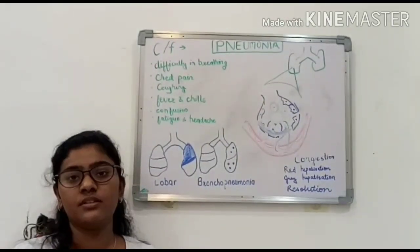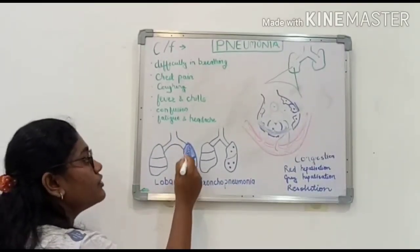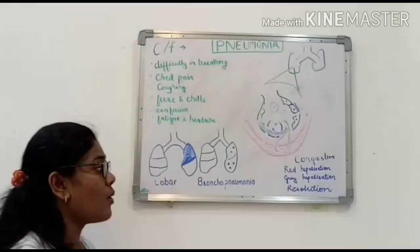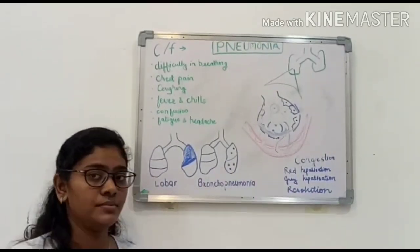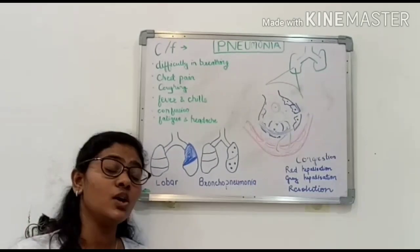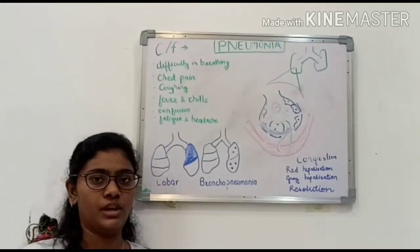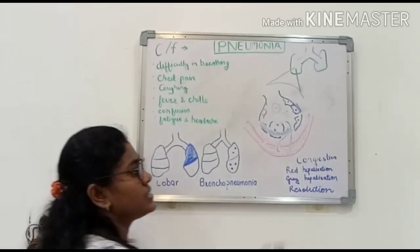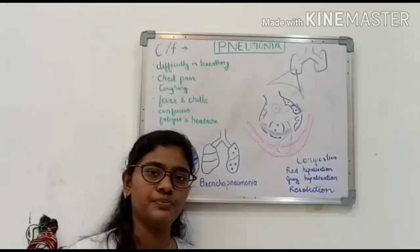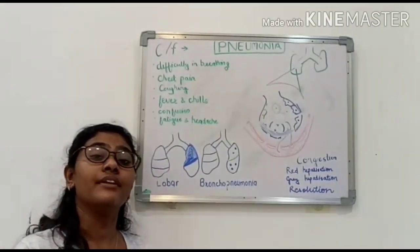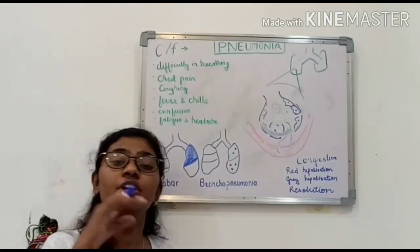Pneumonia is of two types: lobar pneumonia and bronchopneumonia. In lobar pneumonia, one lobe of the lung is involved, while in bronchopneumonia there is patchy involvement of the lungs. Streptococcus pneumoniae usually causes the lobar type of pneumonia. There are four stages of lobar pneumonia: congestion, red hepatization, gray hepatization, and resolution. In red hepatization, red blood cells are present in the alveoli, and in resolution, all the exudate formation reduces.